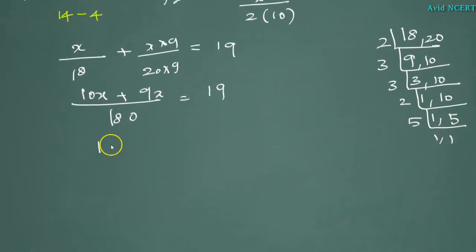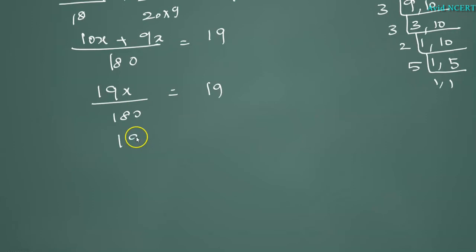10X plus 9X is 19X by 180 equals 19. Cross multiplication: 19X equals 19 into 180, so X equals